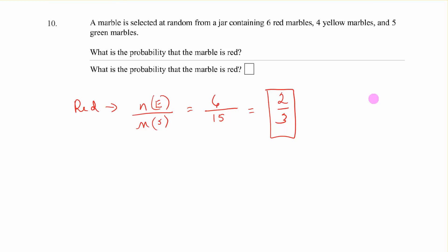Number 10: A marble is selected at random from a jar containing 6 red marbles, 4 yellow marbles, and 5 green marbles. What is the probability that the marble is red? The number of the event is 6, we have 6 red ones. And the number of the sample space, how many marbles were there total? 6 and 4 is 10, and 5 is 15. So 6 out of 15, which simplifies to 2 out of 5, would be your probability that you would have a red marble. So that's some introductory problems for probability, and that should get you going on 7.3.